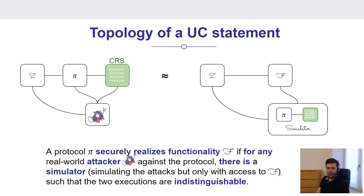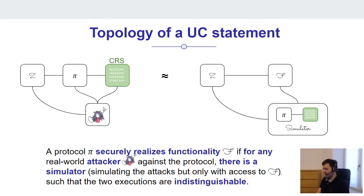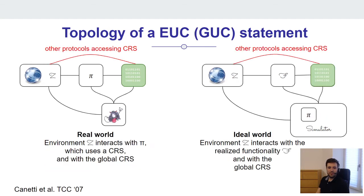Reflecting on these standard UC statements: the CRS is local to the protocol session, and this makes the simulation task easier. The simulator could lie to the environment by creating an indistinguishable version of the CRS but with a backdoor inside. We know all these tricks in the composable security literature related to programming a certain setup assumption or, for example, the random oracle — you can only program the random oracle if it's also local to your session. In order to close the gap between the reality (where the CRS is shared with everyone) and the model (where the CRS is local and the simulator can apply tricks), Ganetti et al. at TCC 2007 introduced a framework called externalized UC and global UC.